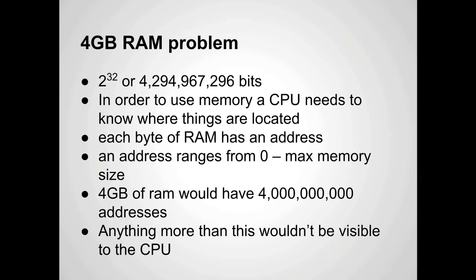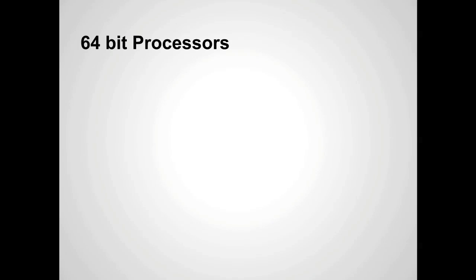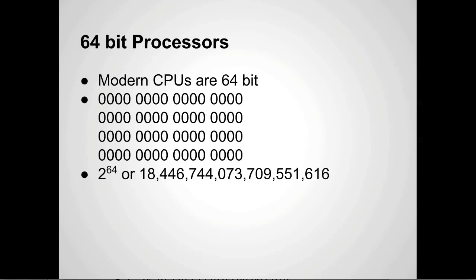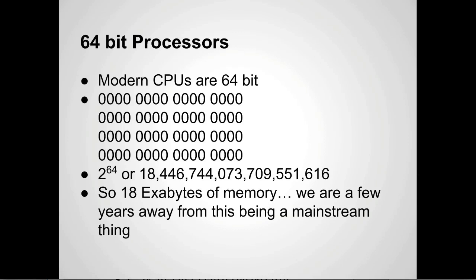So you can see why on a 32-bit system, having more than four gigs of RAM would be ridiculous. That brings us to the 64-bit processor, which is what most modern computers have. That's 64 bits worth of information, giving us 18,446,744,073,709,551,616 locations — 18 exabytes of memory. We're a few years away from this being a mainstream thing, so with 64-bit processors, just throw as much RAM as you want in there, because you're most likely not going to hit this limit unless you're Google.